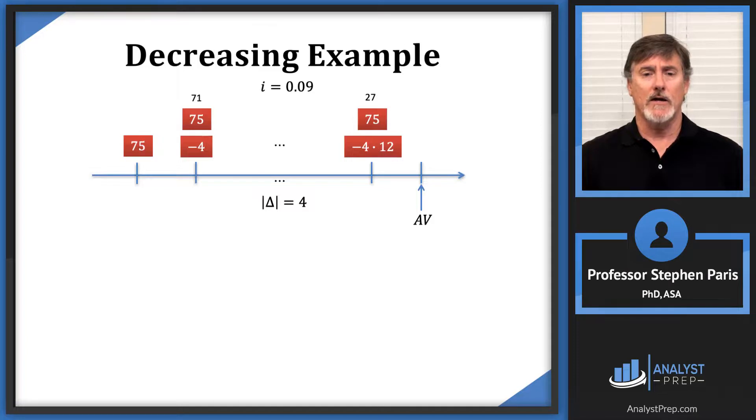So I'm going to write the 48 as 4 times 12, so I've got a negative 4 times 12. Then I'm going to move the first 75 up and group it with the other 75s because those are the level payments of 75. And now I want to value this picture—I want to value these two annuities one period after the last payment.